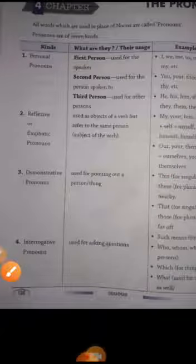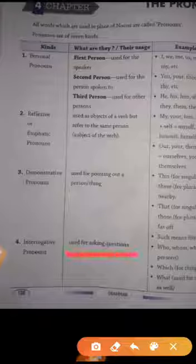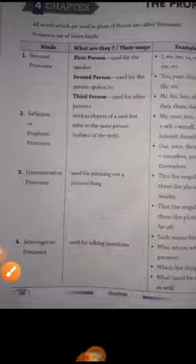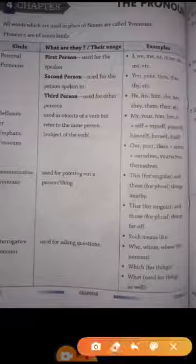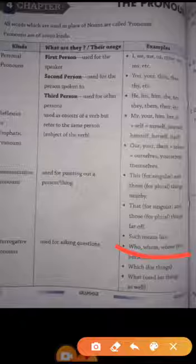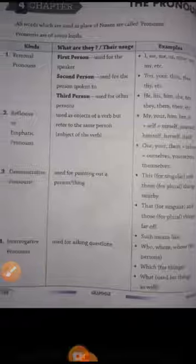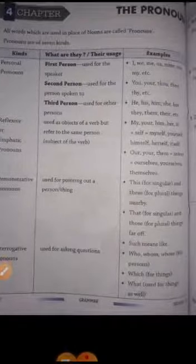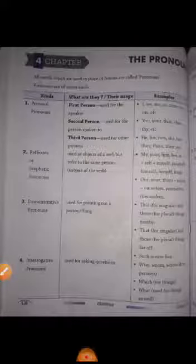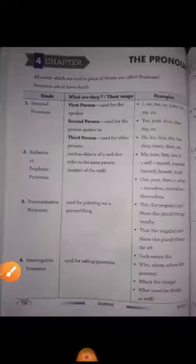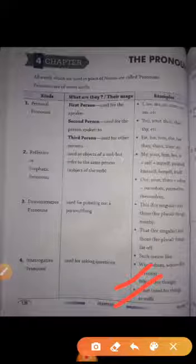Interrogative pronouns. Used for asking questions. Ye pronouns questions poochne ke liye use hota hai. Jaisa ki who, whom, whose. Whose book is this? Whom this book belongs to? Who are you? Ye sari pronouns ham kisi third person ko ya second person ko kya raha hai. We are referring them as who, whom, whose. And things ke liye which. Which and what.